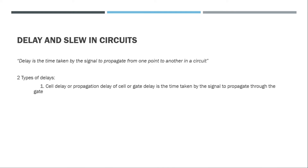There are majorly two types of delays that we study in VLSI. The first is cell delay, and the second is wire delay. Cell delay, or propagation delay of a cell, or gate delay, is the time taken by the signal to propagate through the gate. For example, take an AND gate or a NOT gate — we provide input to that gate and it takes some time for that input to produce output.